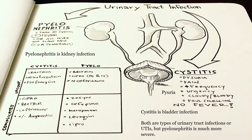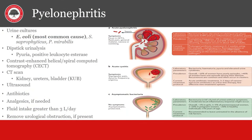Urinary tract infections are very common. There are two main ones to know: pyelonephritis and cystitis. Pyelonephritis is a kidney infection. It has fever and chills and is much more serious. Sometimes it's hard to tell if it is pyelonephritis or nephrolithiasis, but the urinalysis will show pyuria and not just hematuria. You can also have an obstructive pyelonephritis from a ureteral stone. The patient will have flank pain as well as all the symptoms of cystitis. Cystitis is a bladder infection and is very common. It will have dysuria but no fever, increased urgency, and foul urine called pyuria. The most common urinary bacterial infection is E. coli. Asymptomatic bacteriuria should not be treated and just watched. You can further evaluate pyelonephritis with an ultrasound of the kidneys or a CT scan, preferably not contrasted since the patient is already having kidney issues.